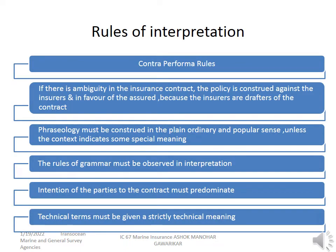Rules of interpretation are very important. What is called is the contra proferendum rule. So the first thing: if there is ambiguity in the policy, the benefit of doubt must be given to the insurer because the policy has been drafted by the insurance company. So whenever there is ambiguity, the insurance company should suffer because the insurers are the drafters of the contract.